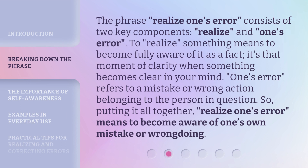The phrase 'realize one's error' consists of two key components: 'realize' and 'one's error.' To realize something means to become fully aware of it as a fact — it's that moment of clarity when something becomes clear in your mind. 'One's error' refers to a mistake or wrong action belonging to the person in question. So, putting it all together, 'realize one's error' means to become aware of one's own mistake or wrongdoing.